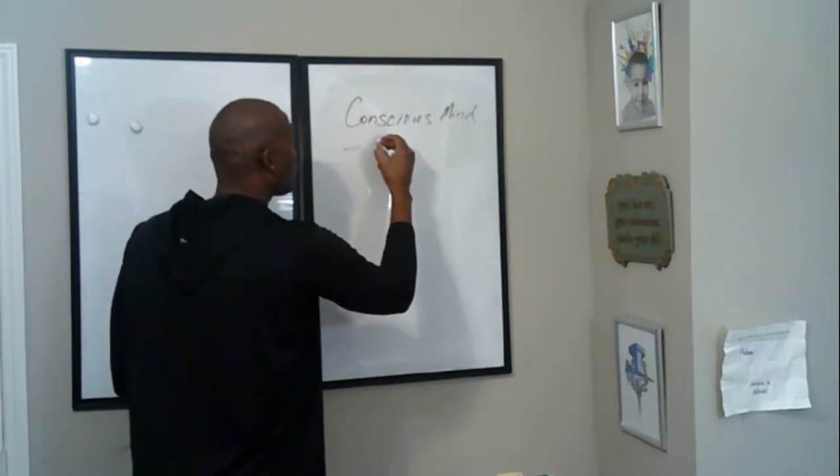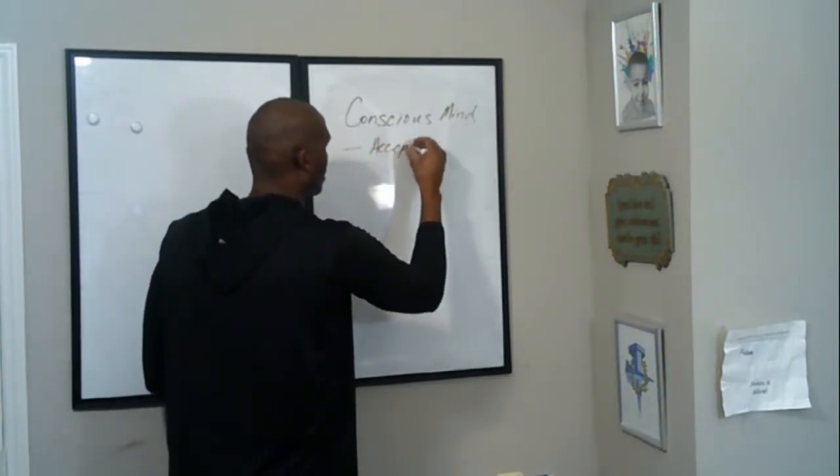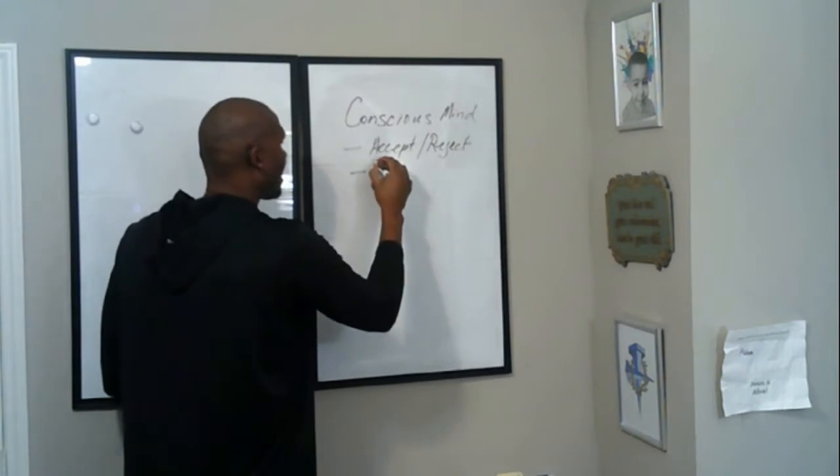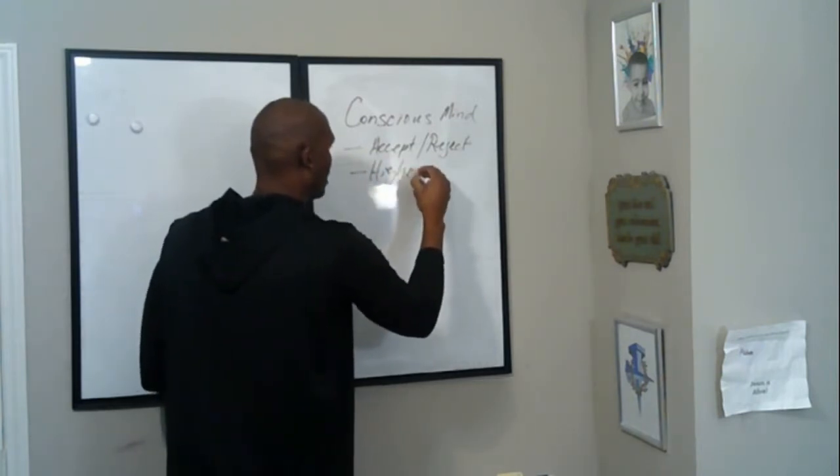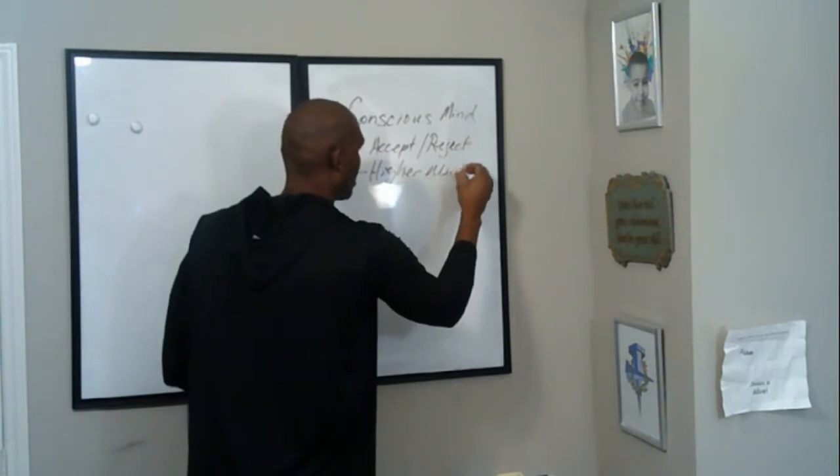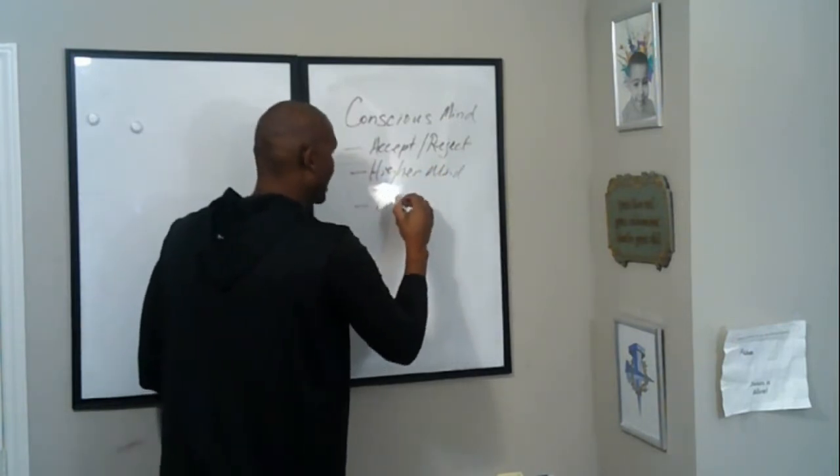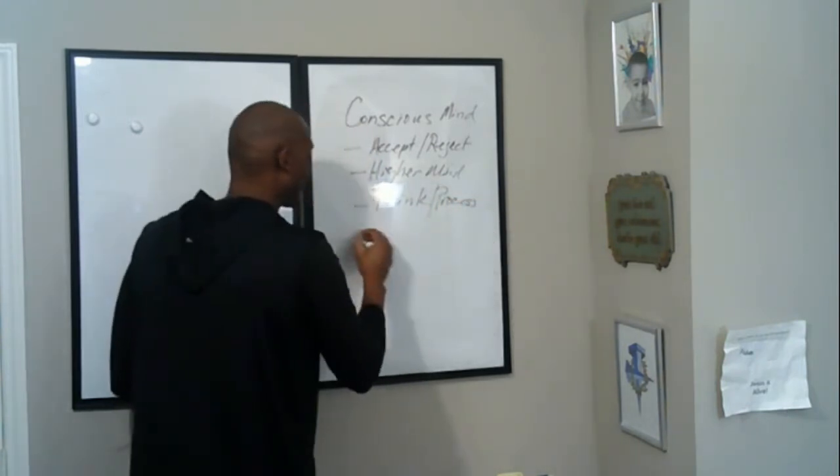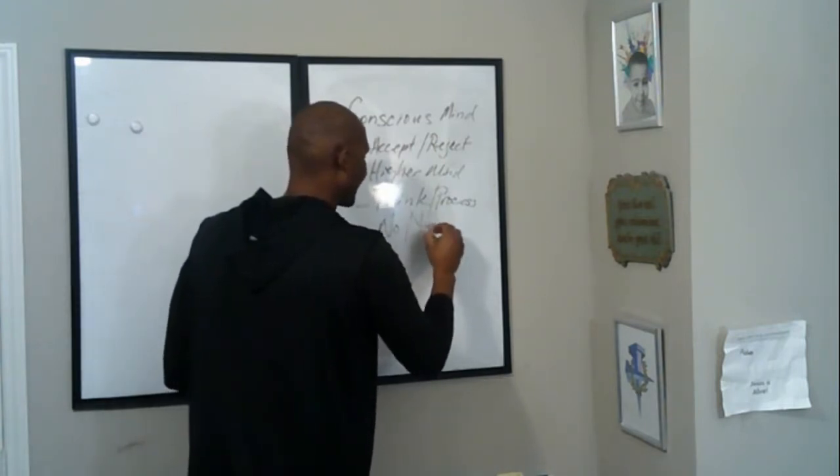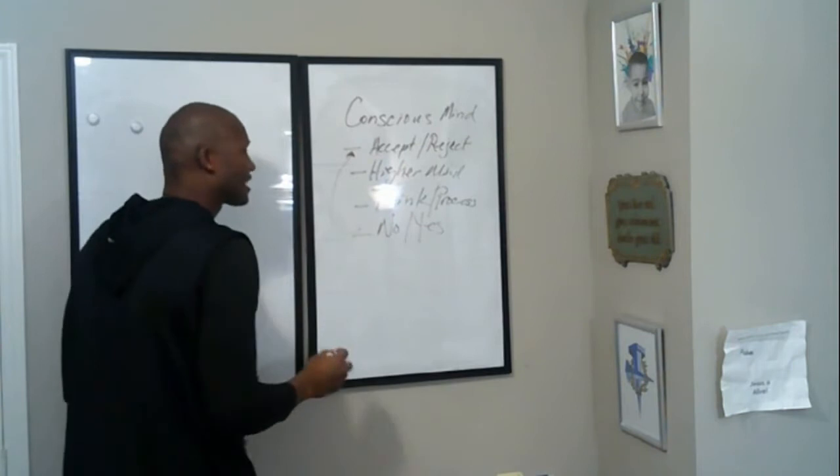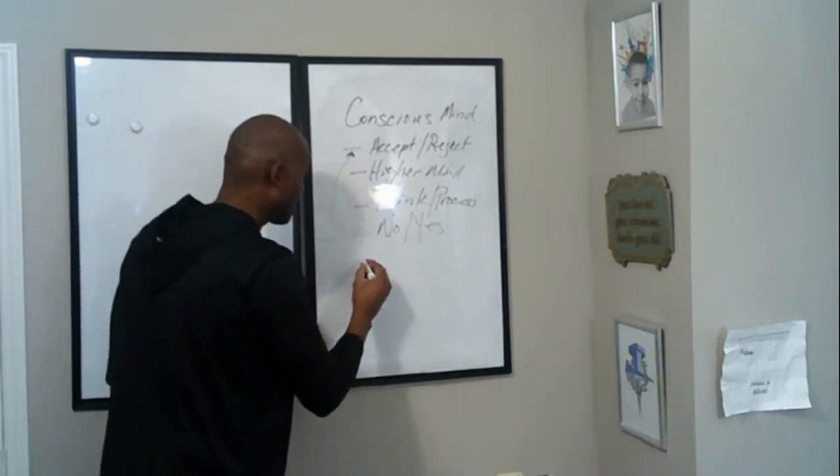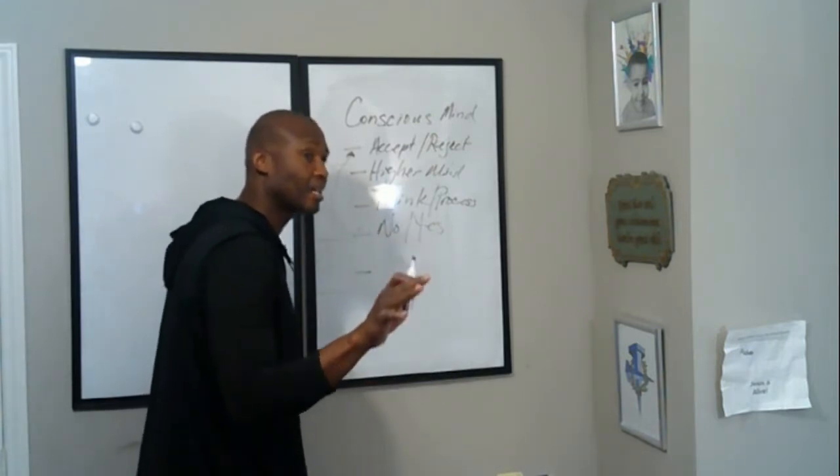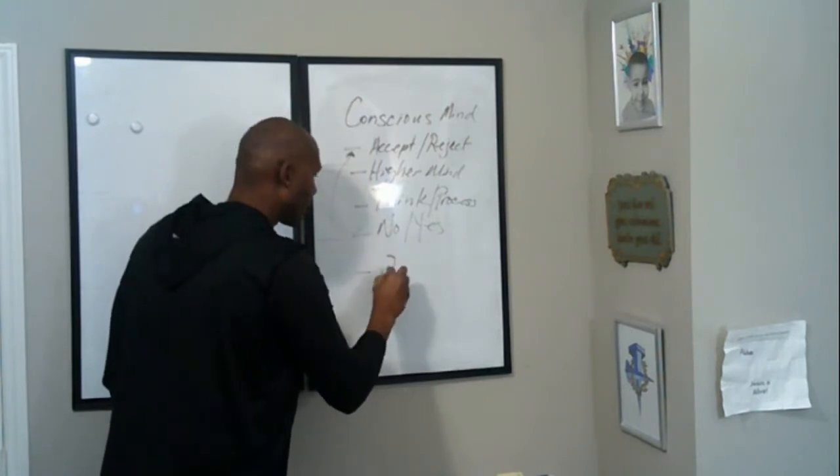Now, the conscious mind, this is where you can accept and reject things. It's also known as our higher mind. This is where we are able to think and process things, where we can actually say no or yes. No different than saying I can accept or reject something.